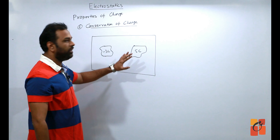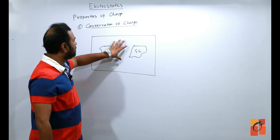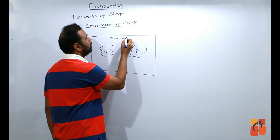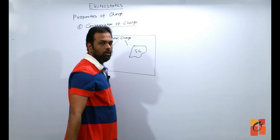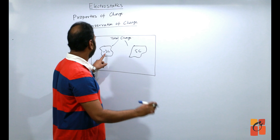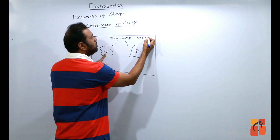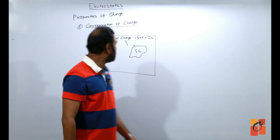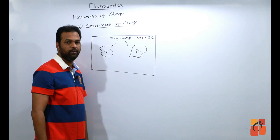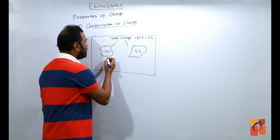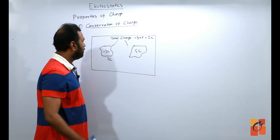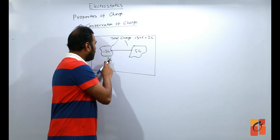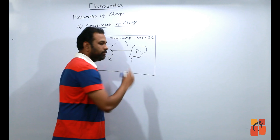इसलिए प्रकृति ने छोटे-छोटे electrons बनाए हैं। Electrostatics में problems solve करते हैं तो बहुत छोटी units आती हैं: 1 microcoulomb = 10⁻⁶ C, 1 picocoulomb = 10⁻¹² C (इसे 1 micro-microcoulomb भी कहते हैं), 1 nanocoulomb = 10⁻⁹ C।